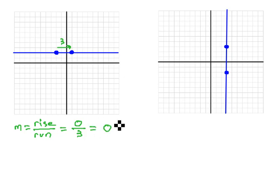0 over 3 reduces to 0. We say this line has a slope of 0, a zero slope.